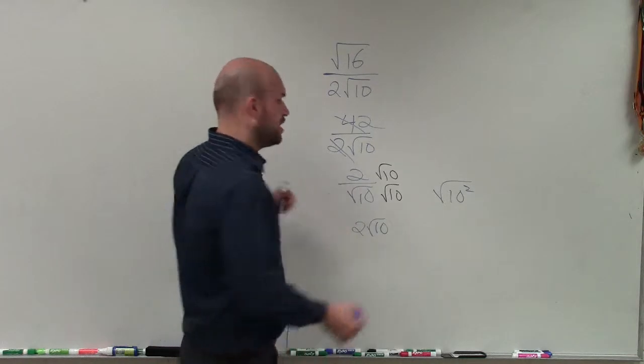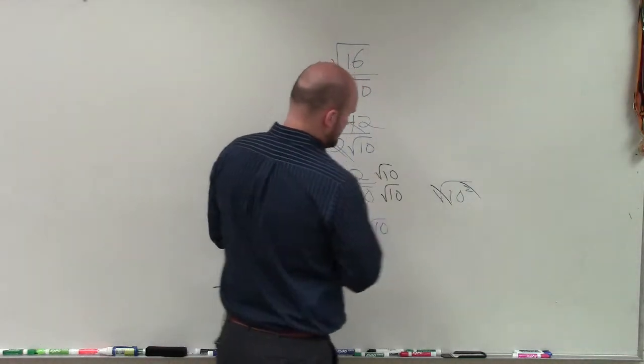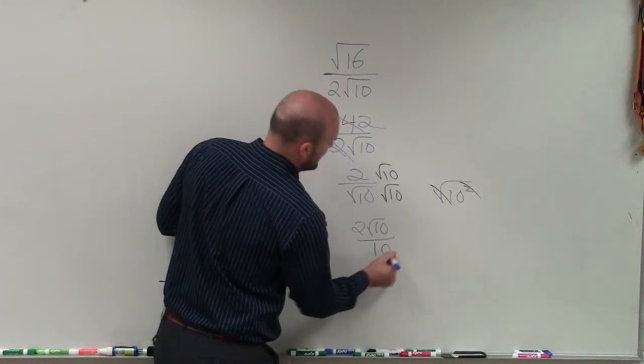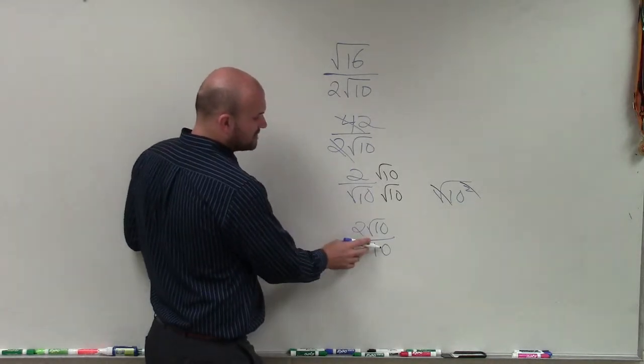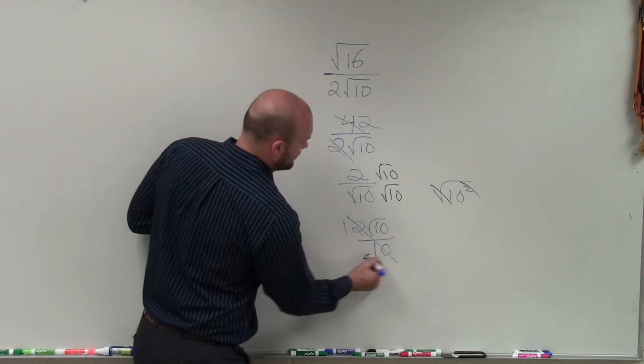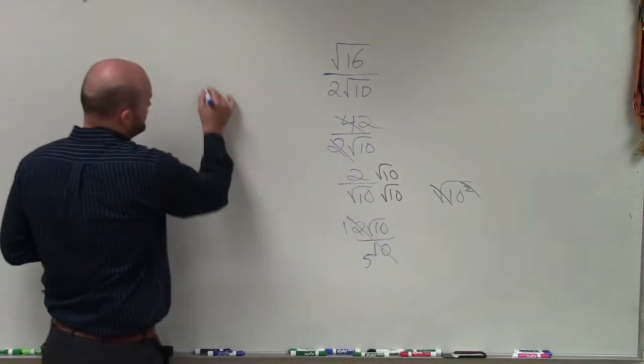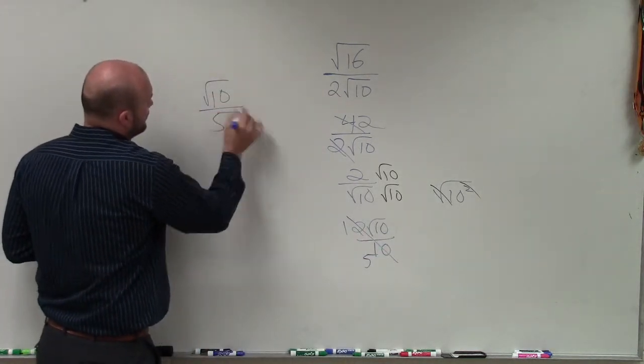The square root and the squaring are inverse operations, so I'm just left with 10. Then I can simplify one more time. 2 over 10 can be reduced to 1 fifth. So my final answer is the square root of 10 over 5.